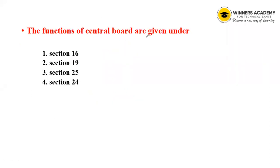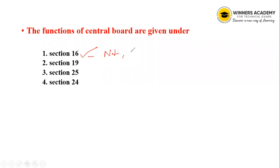Next question: The functions of the Central Board are given under which section? Options are Section 16, Section 19, Section 25, and Section 24. The answer is Section 16. Central Board functions include nationwide programs, mass-media programs, training programs for members and officials, and advising the state and central government on pollution-related issues.